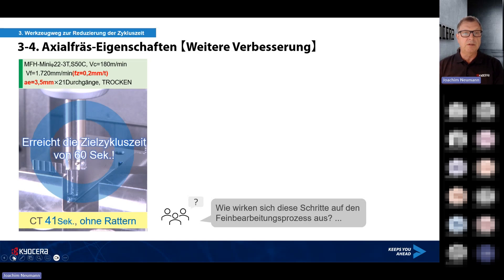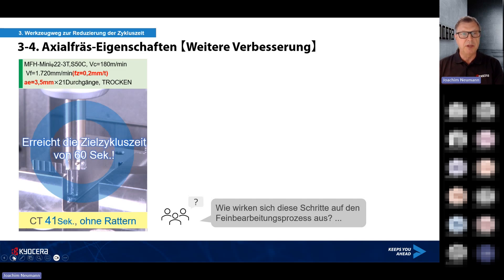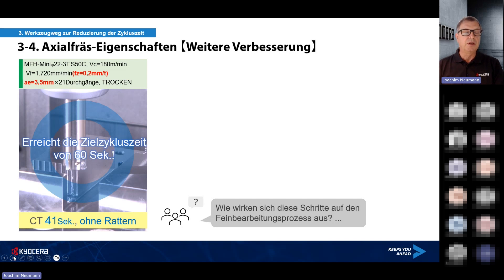Was ist passiert? Beim vorherigen Durchgang waren es 60 Sekunden. Jetzt haben wir es geschafft, auf 41 Sekunden zu kommen – weiterhin ohne Rattermarken, ohne Vibration. Unter Verwendung der maximalen Schnittbreite AE 3,5 mm haben wir die Durchgänge von 30 auf 21 reduziert. Mithilfe der Zickzack-Bahn und des optimierten Fräserdurchmessers 22 mm konnten wir die Bearbeitung auf 41 Sekunden reduzieren.